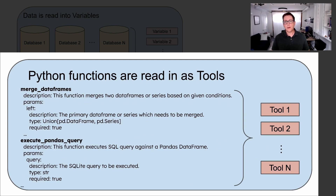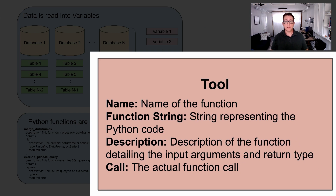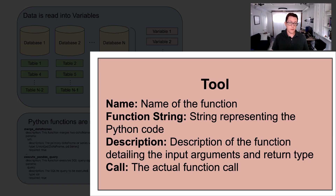So tell me about the second component, scratchpad tools. Tools are just Python functions created to perform a specific task on one or more variables. As with variables, we give tools names and descriptions so that the LLM knows what tools it has access to and how it can use the tools on the variables.